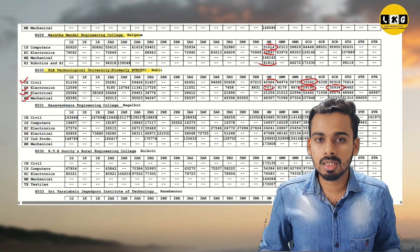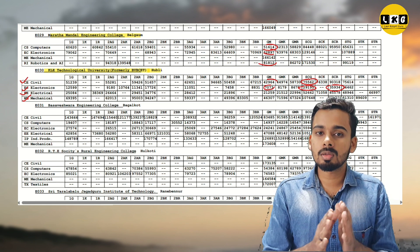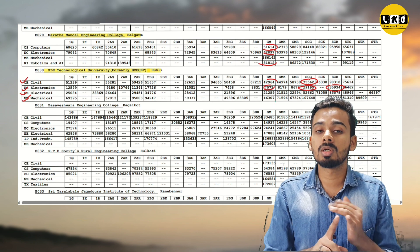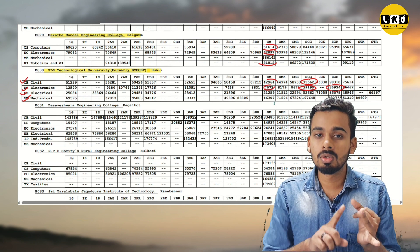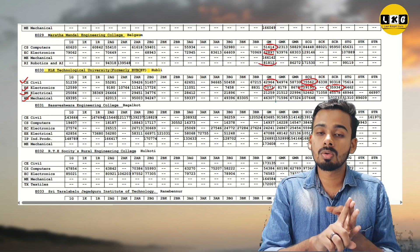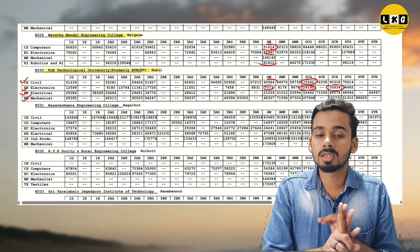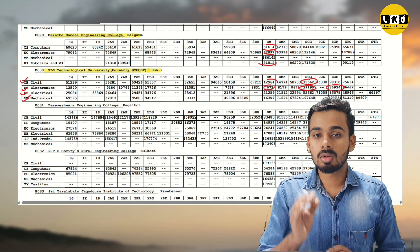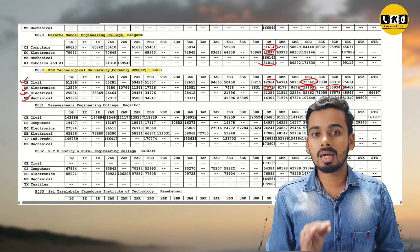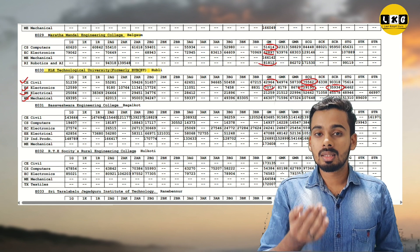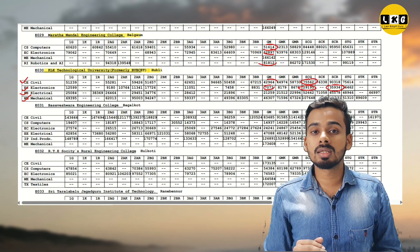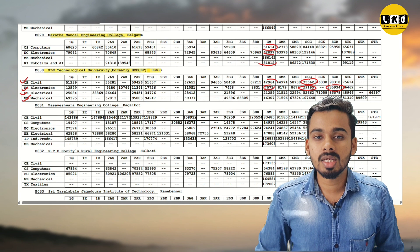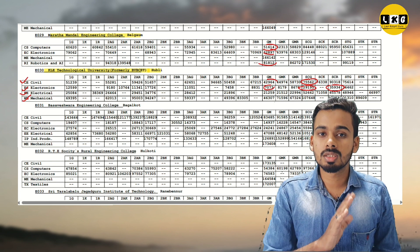In 2023, once the mock allotment starts, we can begin the process. After document verification and mock allotment, we have round one verification and round one allotment. You can see the last seat allotted in round one — that is the cutoff ranking for different colleges.